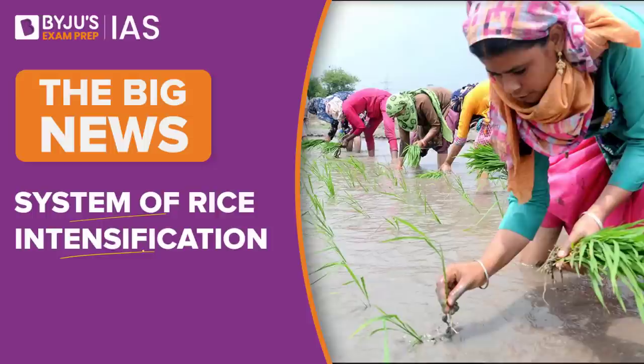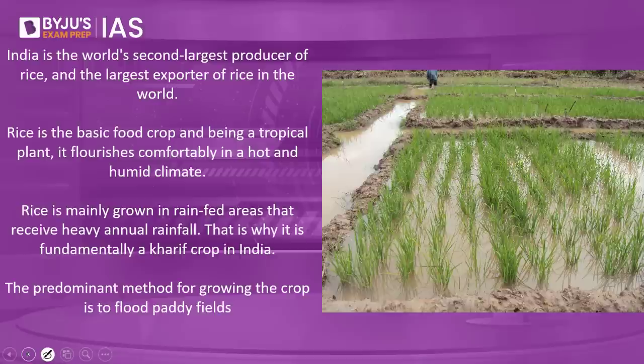When it comes to rice production in the world, the vast majority of the world's rice is grown in Asia. India is the world's second largest producer of rice and the largest exporter of rice in the world. As an assignment, please put in the comment section which is the largest producer of rice — India is the second largest, so which country is the largest?